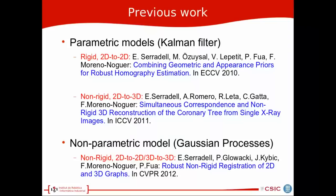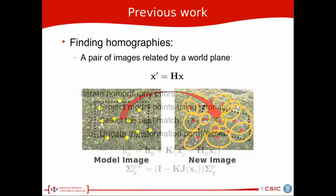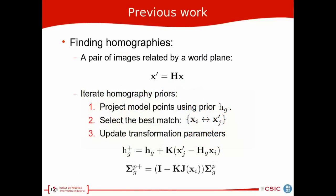In my first work, we were trying to find homographies, so a pair of images related by a wall plane. The method we found to do that is that we trade homography priors, we project the model points from one image to the other using one of those priors, we select best match from keypoints candidates from one image to the other, and we update the transformation parameters using the Kalman filter equations.